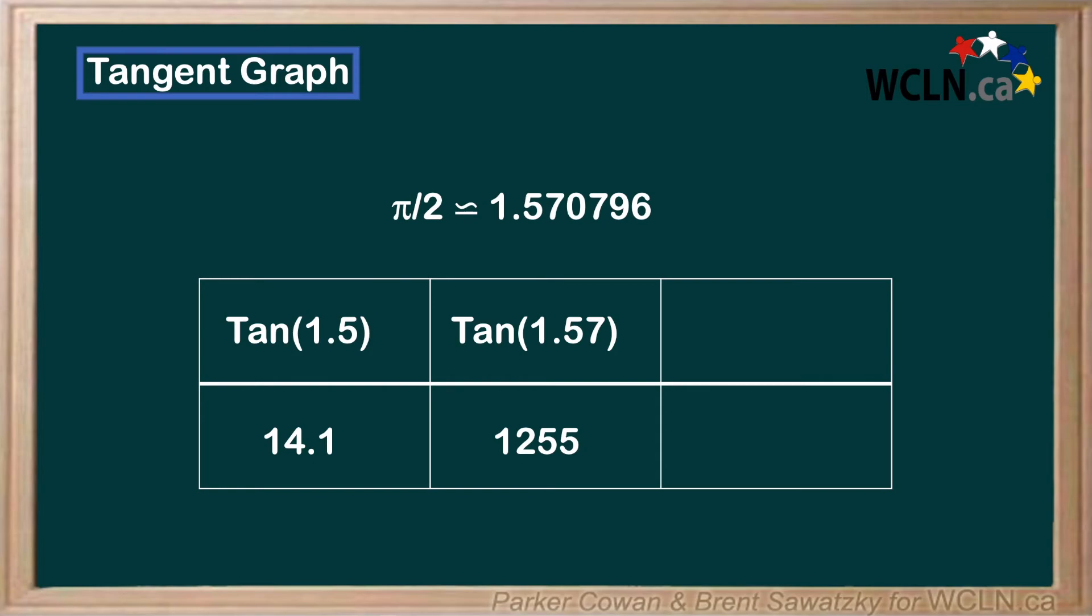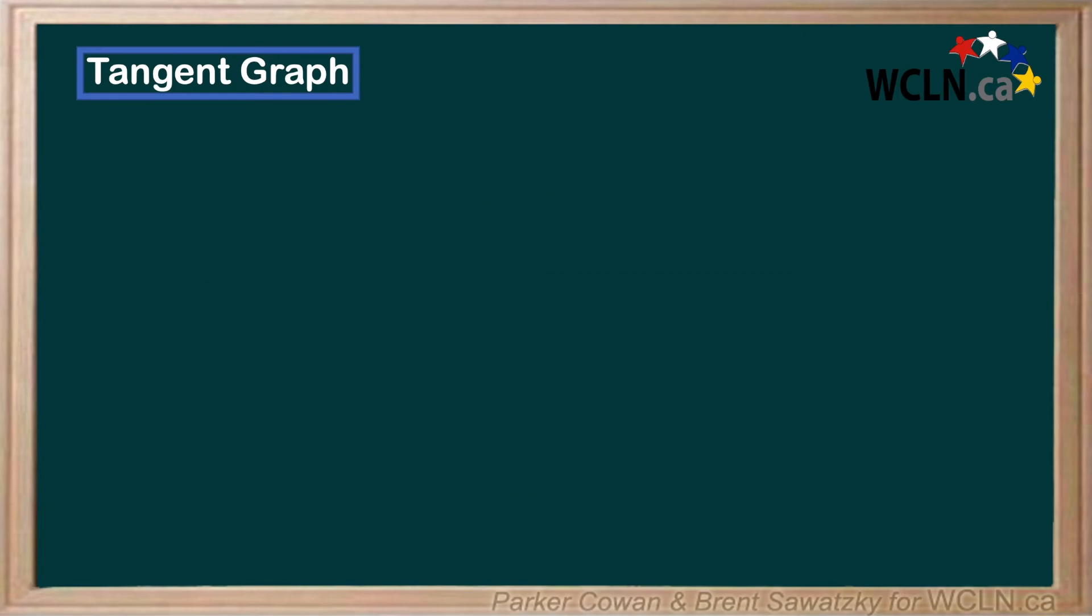Finally, let's try 1.5707, and we see that we get a whopping 10,381. Evidently, as we get closer and closer to that asymptote at pi over 2, our numbers jump up bigger and bigger. Thus, for our graph, we can just assume an almost straight line stretching to infinity as we approach the asymptote.